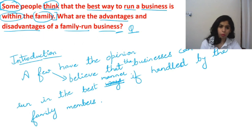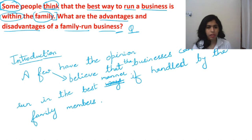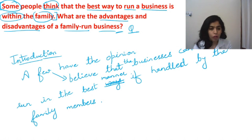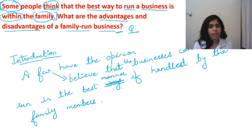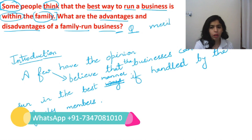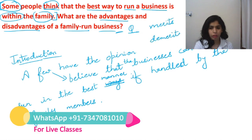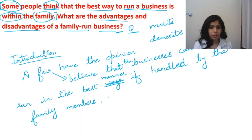Now we know the introduction. We can prepare a thesis statement as well. For example: 'This essay will discuss how family business is beneficial as well as the problems it creates.' Or: 'This essay will firstly discuss the merits of family run business and then the demerits of the same.' You can use words like positives/negatives, merits/demerits, advantages/disadvantages, or benefits/drawbacks.